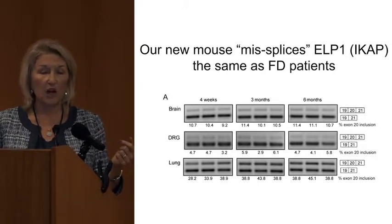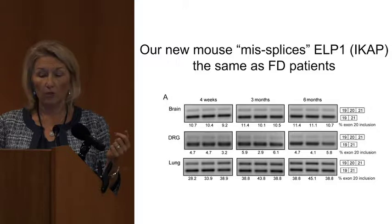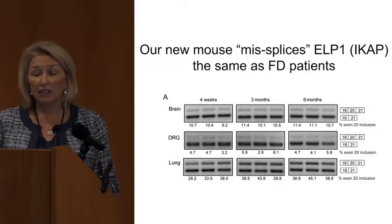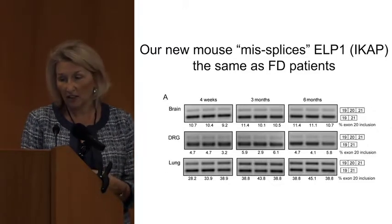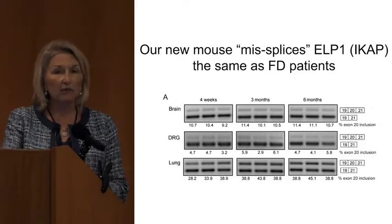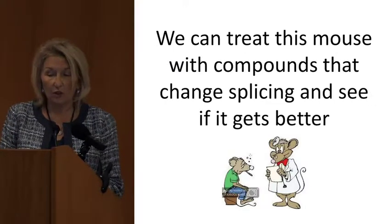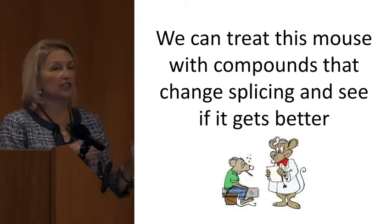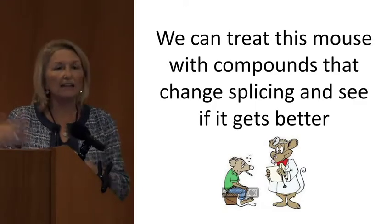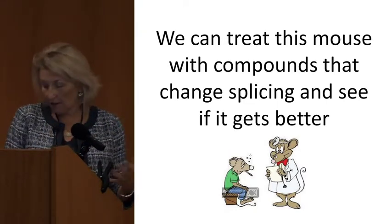Those of you who have seen me talk for a long time are used to looking at this. What you're looking at here is what the normal gene looks like versus the mutant — this is the gene without the exon. Now that we have these mice, we were able to ask: if we treat with drugs or use other methods to fix this splicing, can we study these mice to see if it will help the disease? Can we treat this mouse with compounds that change splicing and see if it gets better? Until about two and a half years ago, we really weren't able to do that. We had to make that mouse, study it, determine if it had symptoms of FD, and then begin treatment.